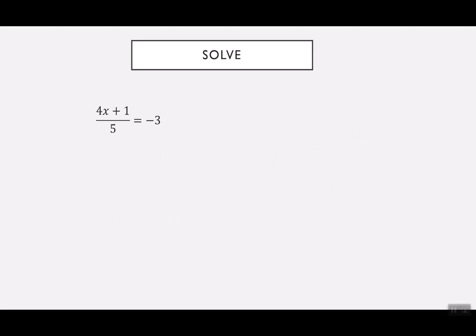Here I have 4x plus 1 over 5 equals negative 3. Think about what would you do first. Hopefully you said, I'm going to multiply by 5. Make sure you cross it out on the left. Don't multiply it. I have 4x plus 1 equals negative 15. Now I can move the 1. And as I move it, I'm subtracting it. That says 4x is negative 16. And then our final step is to divide by 4. That gives me negative 4.